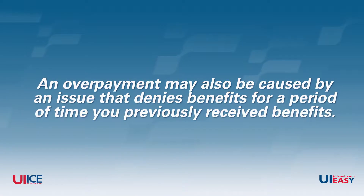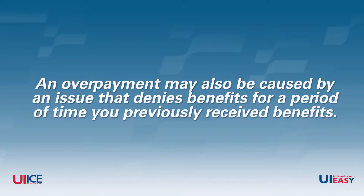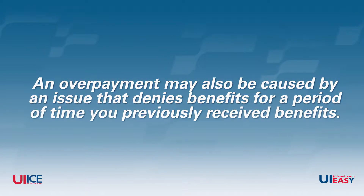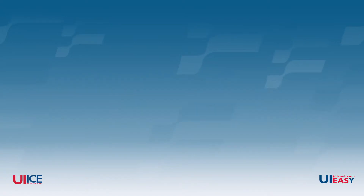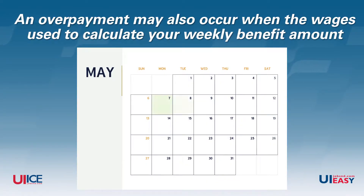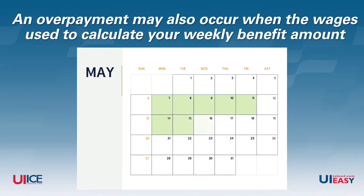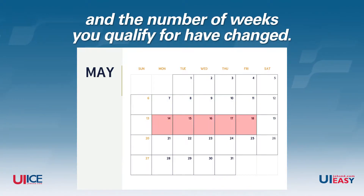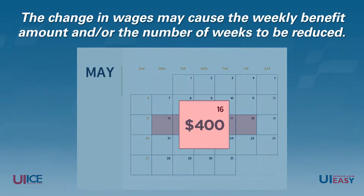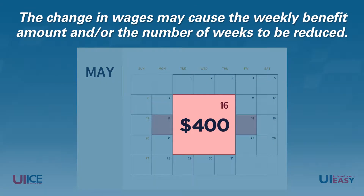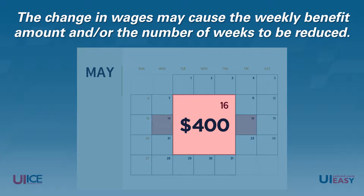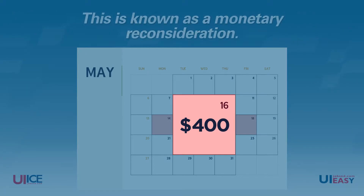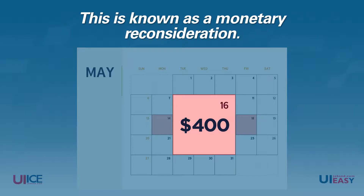An overpayment may also be caused by an issue that denies benefits for a period of time you previously received benefits. An overpayment may also occur when the wages used to calculate your weekly benefit amount and the number of weeks you qualify for have changed. The change in wages may cause the weekly benefit amount and/or the number of weeks to be reduced. This is known as a monetary reconsideration.